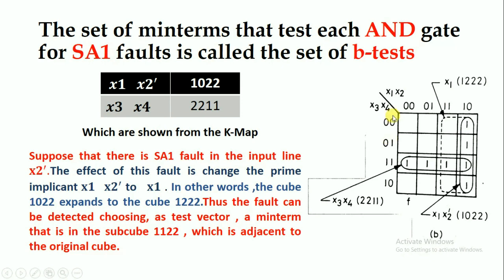We will represent this in the form of a K-map. x1·x2' means x1 is one and x2 is zero, giving us the cube represented as 1·0·2·2 (where 2 denotes a don't-care dimension). At the same time, the other prime implicant x3·x4 can be represented as 1·1, giving the cube 2·2·1·1. These are the cubes which are represented by the boolean function f.